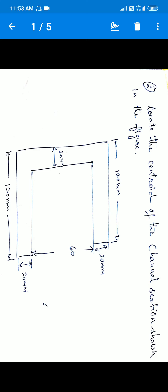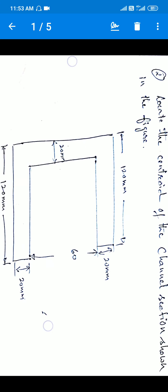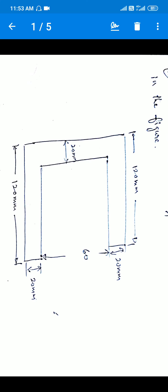Today we start with one more problem — the second problem on centroid. The problem says: find the centroid of the channel section shown in the figure. When you see the figure, it is a channel section which is symmetric, consisting of three elements: 120×20, 20×60, and 20×20.